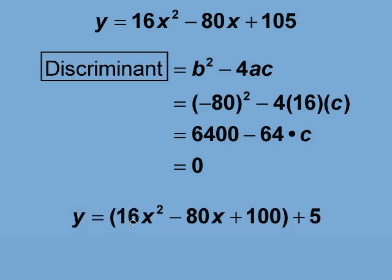Going back to the quadratic equation, we can add the c term of 100 to this expression as if we were completing the square. Since the original term was 105, we leave 5 outside the parentheses as shown here.